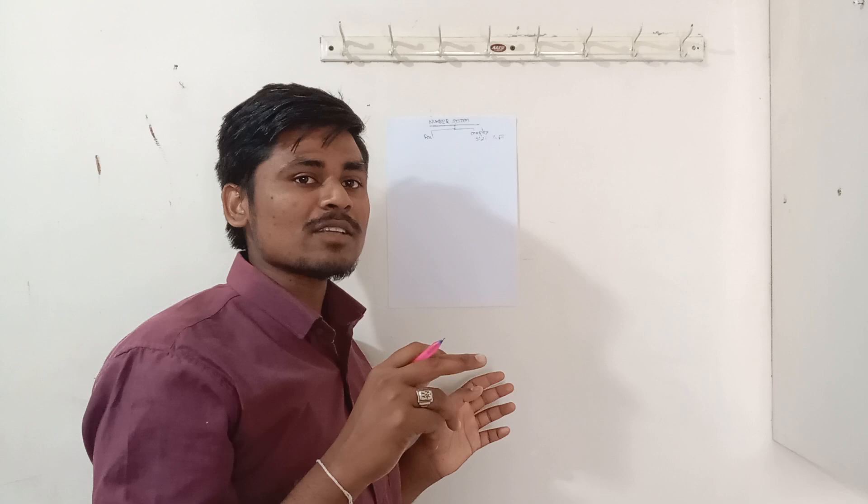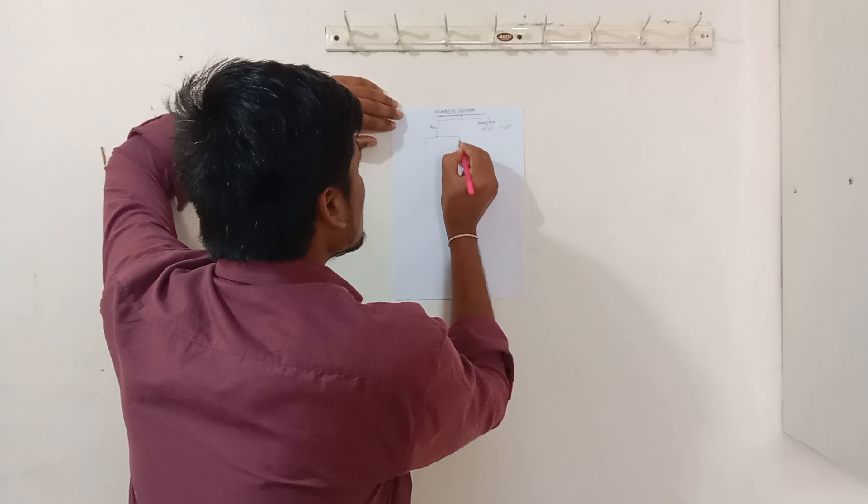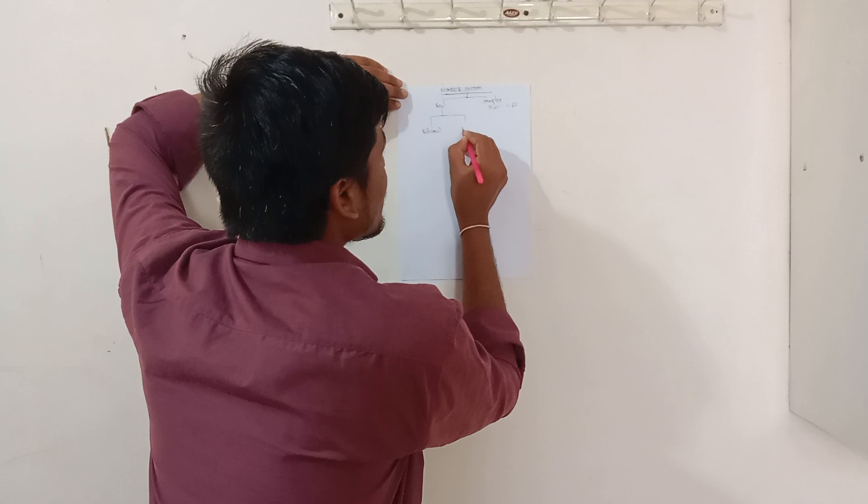Now we can discuss about real numbers. Real numbers are of two types: rational numbers and irrational numbers.